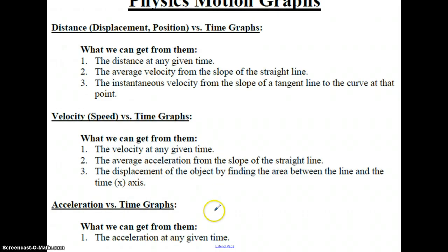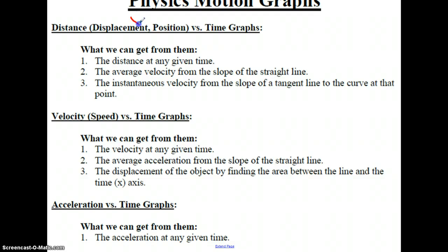Let's start by taking a look at the types of graphs that we can draw and the information we can get from them. We start with distance, displacement, or position — all the same thing with regards to the graphs. The symbol we'll be using for distance, displacement, and position is X, and the symbol for time is T. So the distance-time graph will be an X versus T graph.